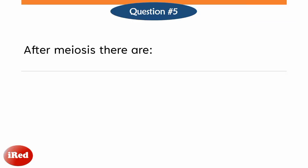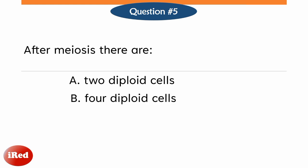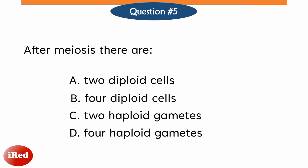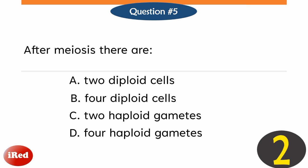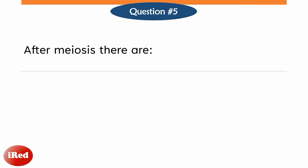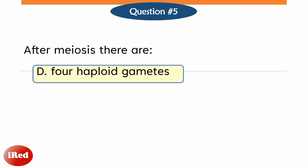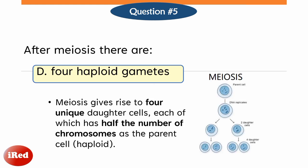Question number five. After meiosis, there are: letter A, two diploid cells; B, four diploid cells; C, two haploid gametes; or letter D, four haploid gametes. Meiosis gives rise to four unique daughter cells, each of which has half the number of chromosomes as the parent cell.